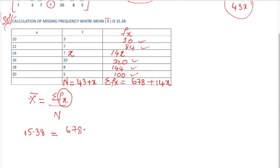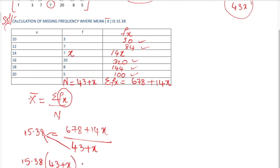Now do cross multiplication. 15.38 into 43 plus x bracket. Bracket means multiplication. This equals 678 plus 14x.